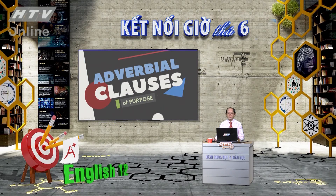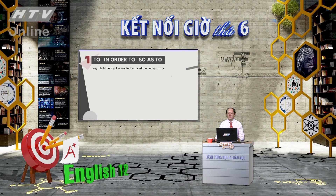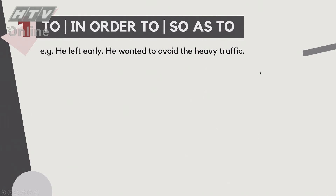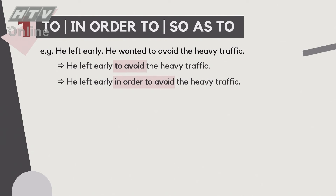Để diễn tả mục đích, chúng ta dùng: 'to', 'in order to', hoặc 'so as to', đằng sau là infinitive. Ví dụ: 'He left early. He wanted to avoid the heavy traffic.' Nối lại: 'He left early to avoid the heavy traffic', hoặc 'He left early in order to avoid the heavy traffic', hoặc 'He left early so as to avoid the heavy traffic.'